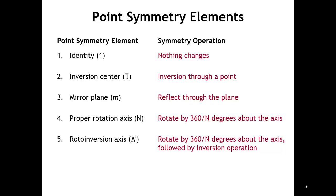And then we have a rotoinversion axis, n-bar. This is a composite symmetry element which contains a rotation axis followed by an inversion operation. Those who've studied point group symmetry for molecules may be familiar with a rotoreflection axis — rotating by a certain amount and then reflecting through a perpendicular mirror plane. In crystallographic symmetry, we don't use that element; instead we use the rotoinversion axis. So for a four-bar axis, we rotate by 90 degrees and then do an inversion.